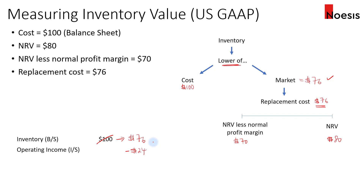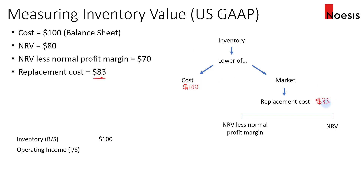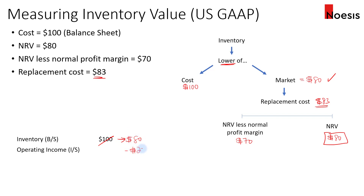Remember, in subsequent periods, reversal is prohibited under US GAAP. In another scenario where the replacement cost is $83 — with the same NRV of $80 and lower limit of $70 — the replacement cost exceeds the upper limit. So we set the market at the upper limit of $80. Taking the lower of $100 and $80, the inventory is written down to $80, and a loss of $20 is recognized in the income statement.